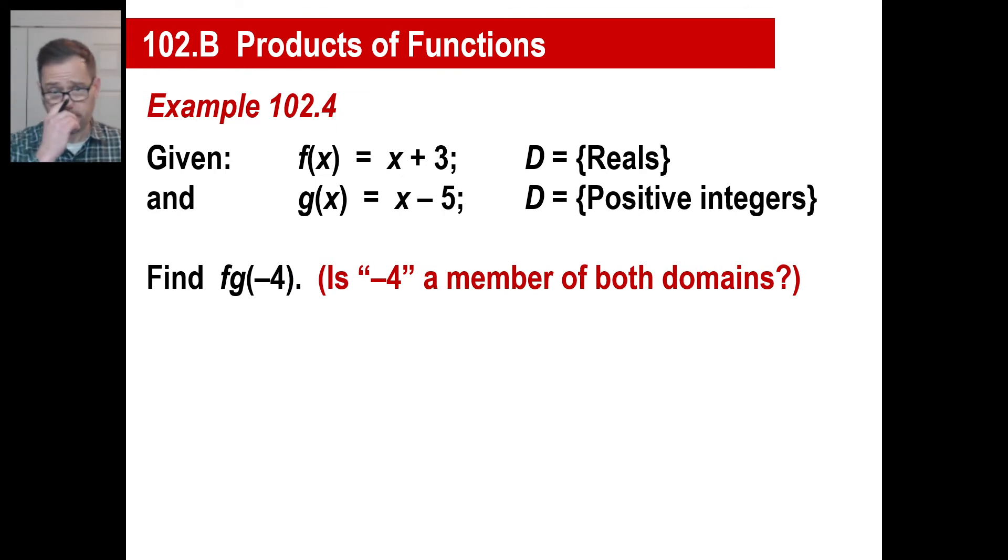Let's try another one. Look at this one together. We don't have to copy it yet. You're given f of x is that, g of x is that. You're allowed to use reals and positive integers. Let's find f, g of negative four. Well, is negative four a member of both domains? Is negative four a real number? Yes, it is. Is it a positive integer? No, it's not. So there's nothing you can do with this one. You just simply skip it. I know that breaks your heart.